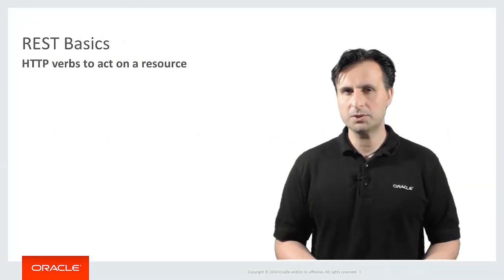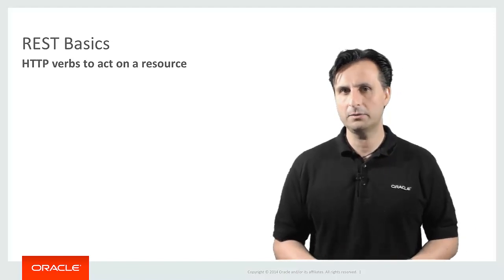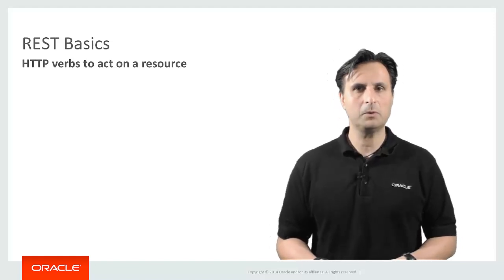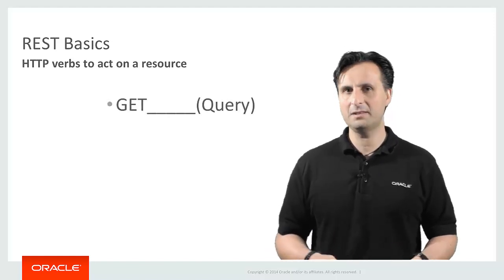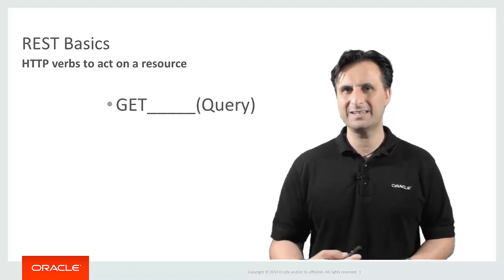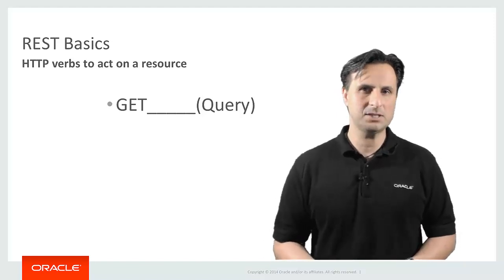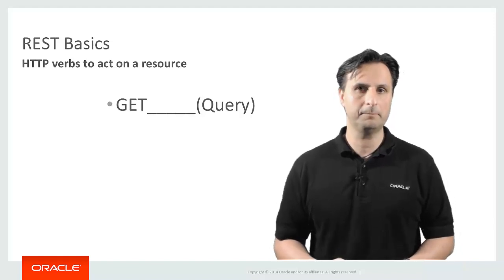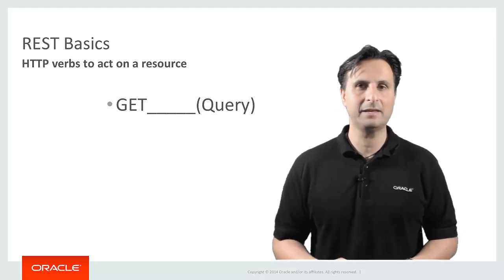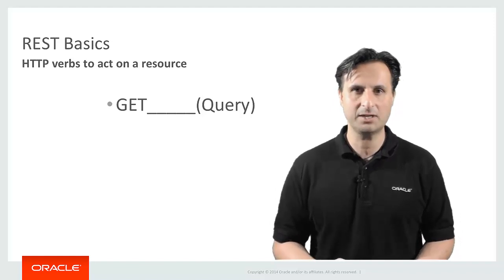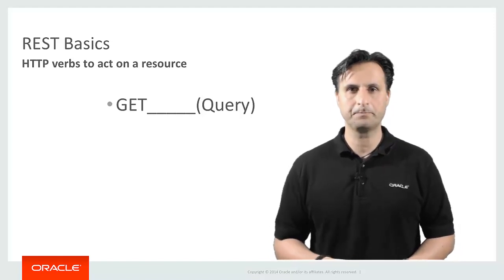When telling the server you want to update a resource, you use HTTP verbs — not query parameter verbs. We all know about GET: everything we query on the internet is a GET request. Sending a GET to a REST service performs a query, and GET requests should never cause a state change. I could issue 400 GET requests and they should never ever change the status of a resource.